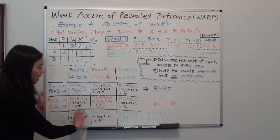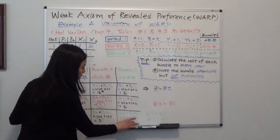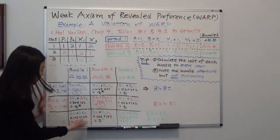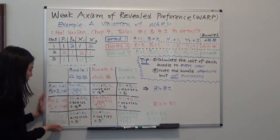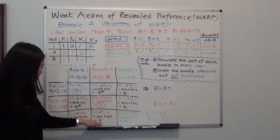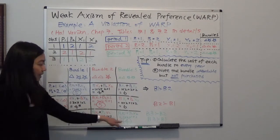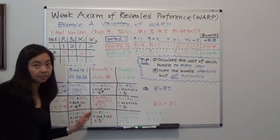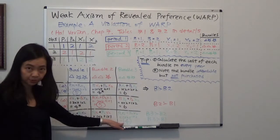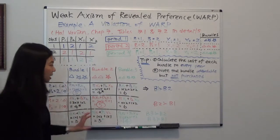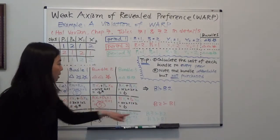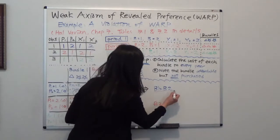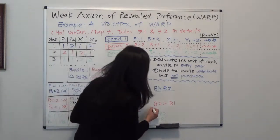In year 3, I calculated the cost of all 3 bundles and I chose bundle 3. I'll leave the calculation as practice for you, but the cost of bundle 1 in year 3 is $3 and the cost of bundle 2 in year 3 is also $3. Since $3 is less than the cost of bundle 3 ($4), both bundle 1 and bundle 2 were affordable in year 3, but I chose bundle 3. Therefore, I prefer bundle 3 to bundle 2, and I also prefer bundle 3 to bundle 1.